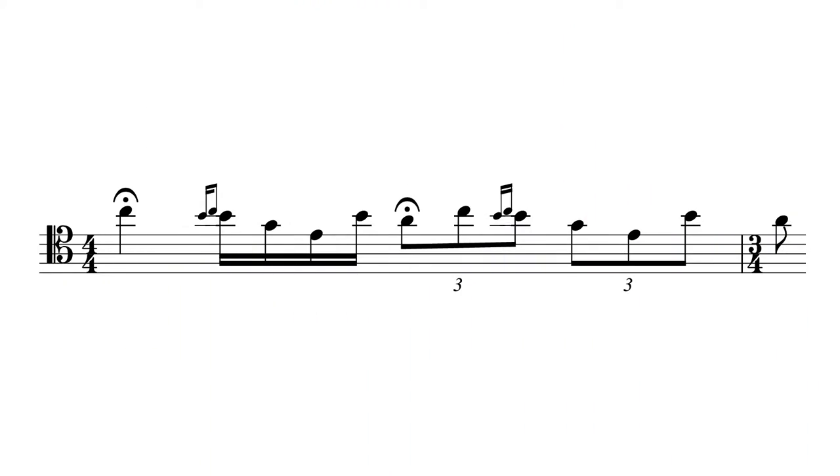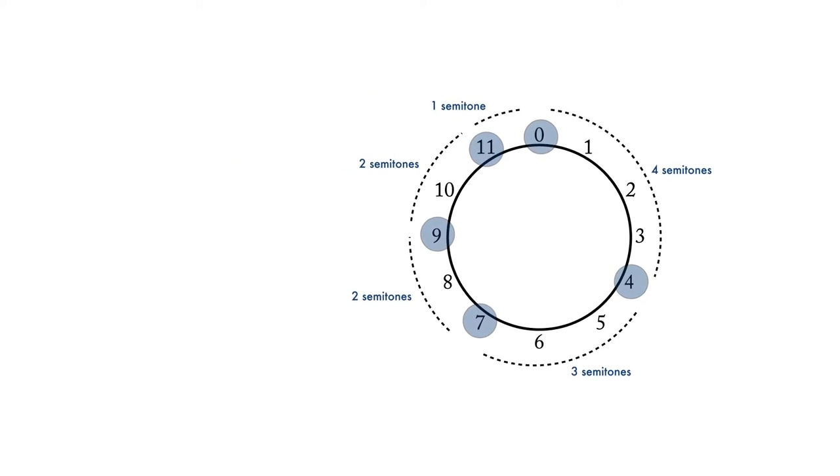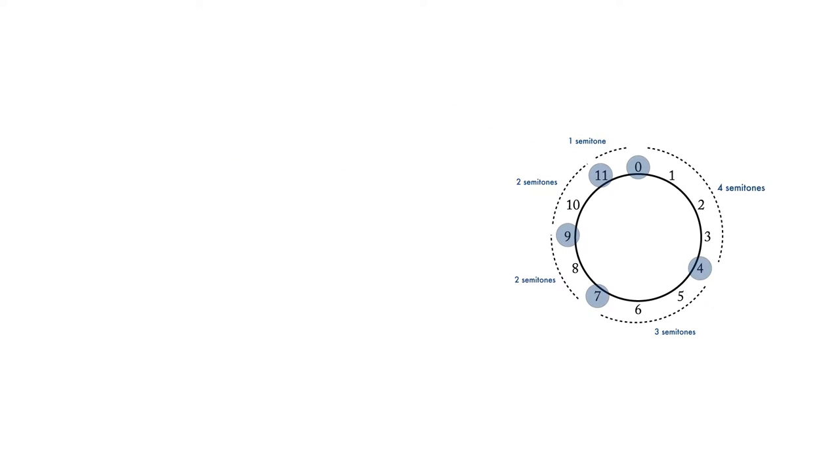To put a pitch class set into normal form, first convert all of the pitches into integer notation and remove any duplicate pitch classes. Plot each pitch class on the clock face and observe the intervals between them. Then, reorder your pitch class set so that the largest interval, the wraparound interval, occurs between the last pitch class and the first pitch class in your set. If there are two possible ways to do this, choose the ordering that includes the smallest intervals at the left side. Note that pitch class sets in normal form will always be in some kind of ascending order, so you're always going to want to read in clockwise fashion.